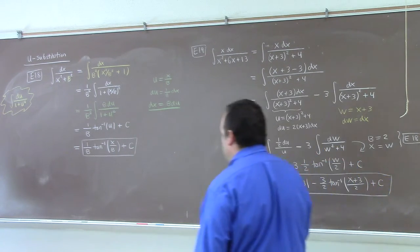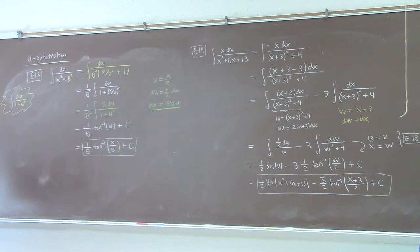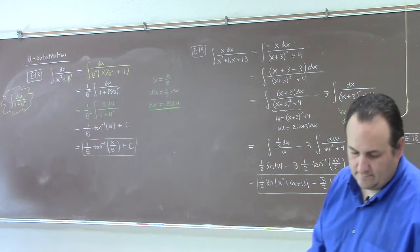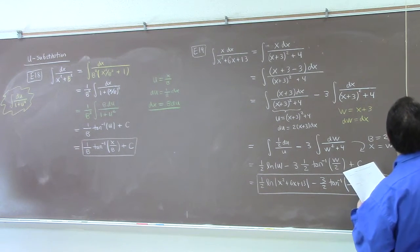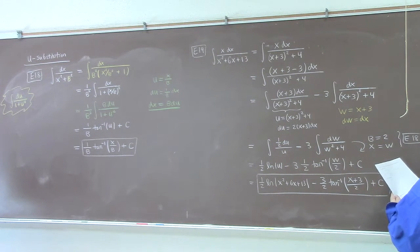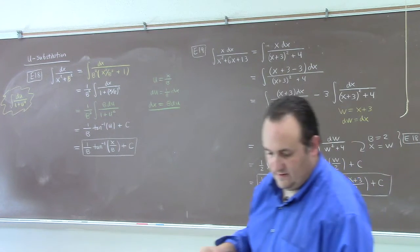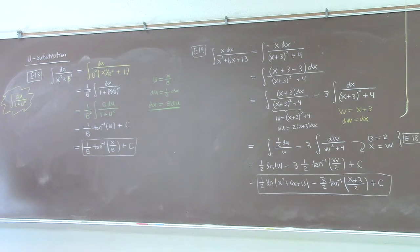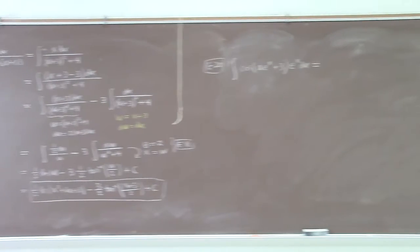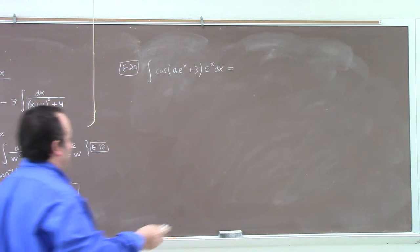So our final example for today, example 20. Here, a is not equal to 0, and it's a constant. So, in a problem like this, you almost always want to make the argument of the cosine be the u.